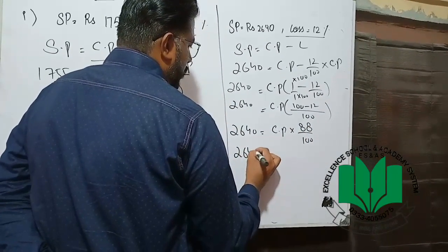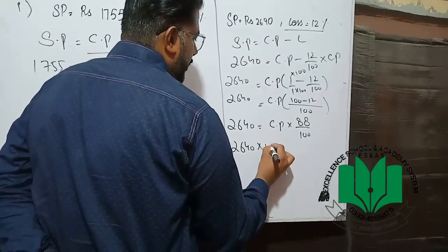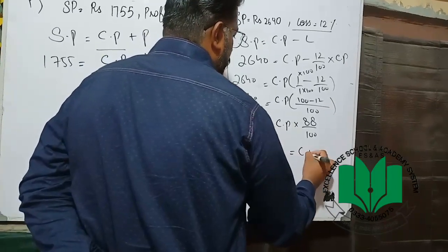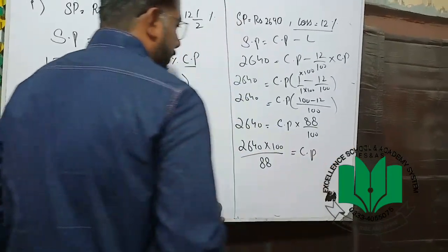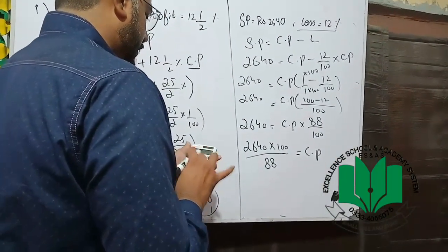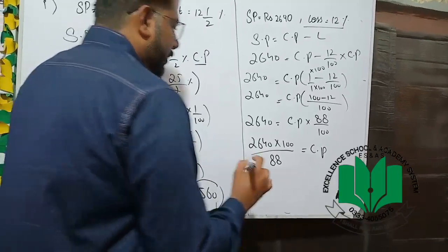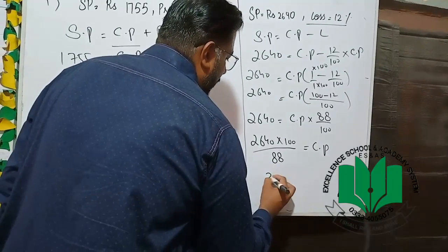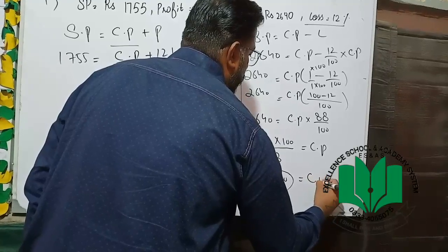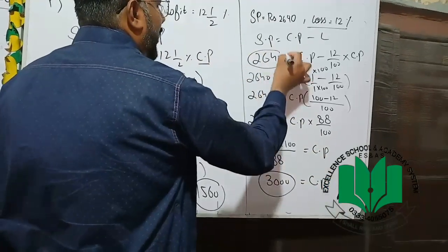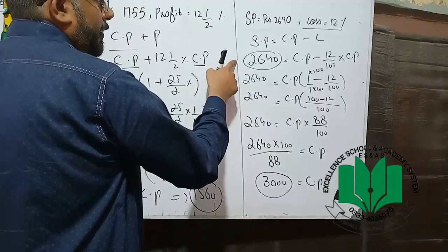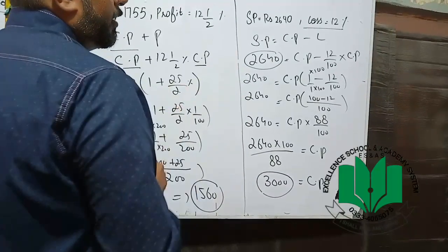2640 multiplied by 100 divided by 88 is equal to cost price. 3000 — cost price is 3000. Because 2650 is the more expensive one, the cheaper one is sold at a loss. Another buyer — loss. Thank you.